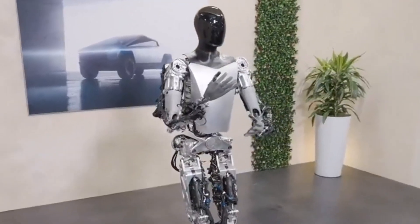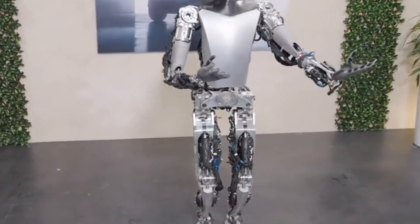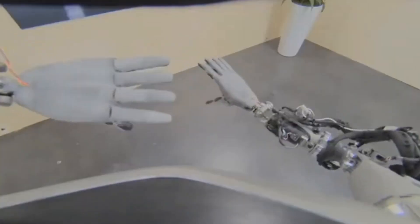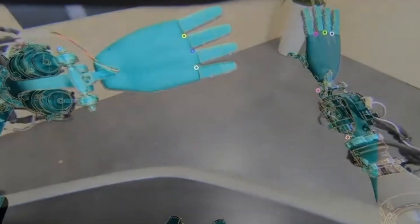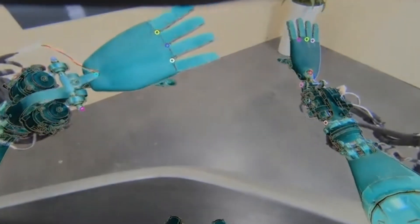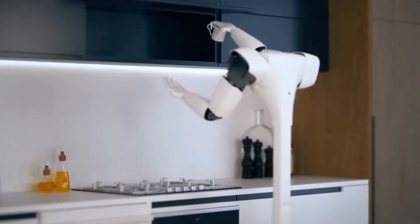In demos, Optimus showed off some yoga moves. But Tesla's vision goes beyond just tech skills. They want Optimus to feel almost human, not just in abilities, but in how it moves around. Their big dream, to seamlessly fit this robot into our everyday lives.